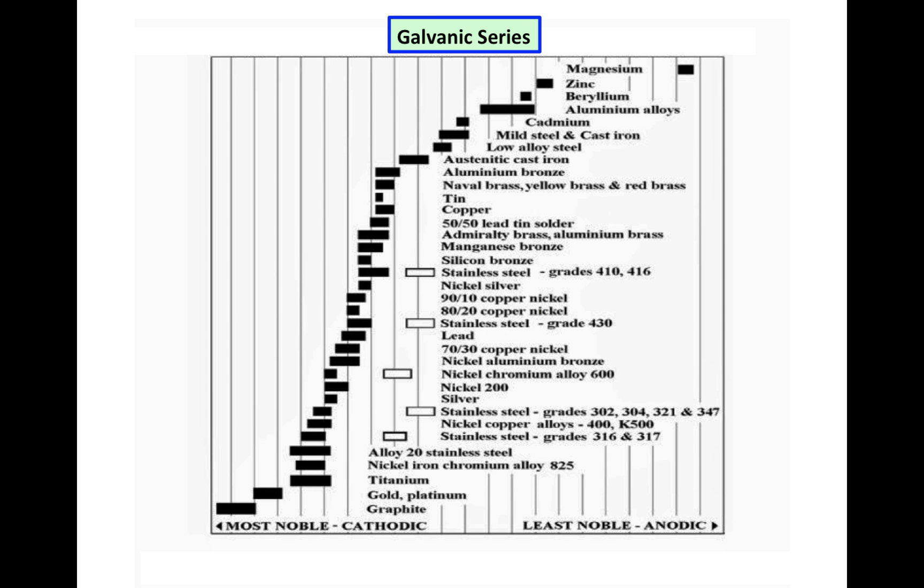This is what's called a galvanic series. Over on the right, we have more reactive metals, and those are known as less noble, or the least noble, and are anodic, which means they typically form the anode. Aluminum alloy is a good example.